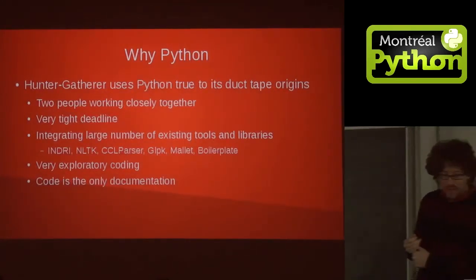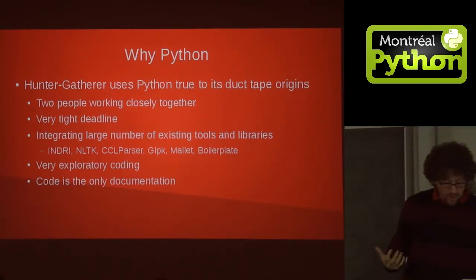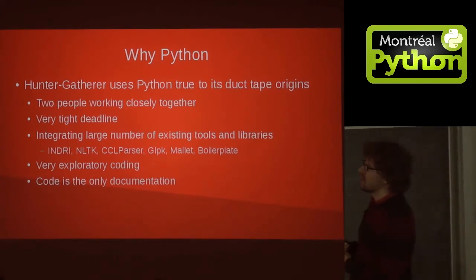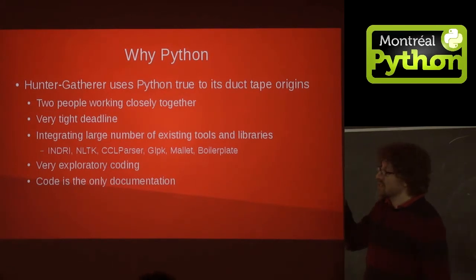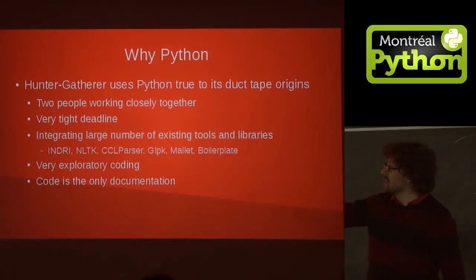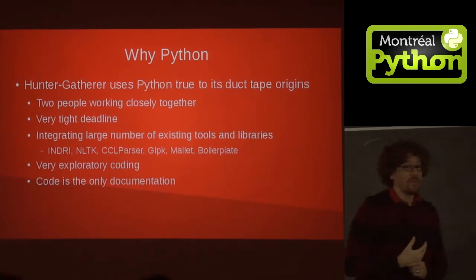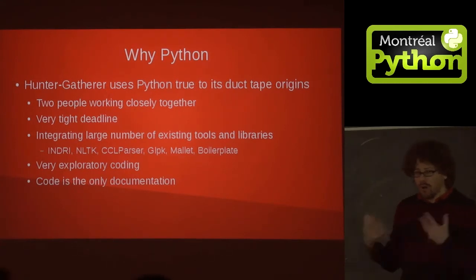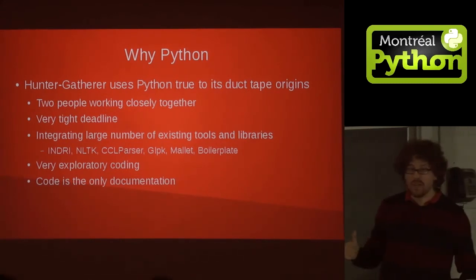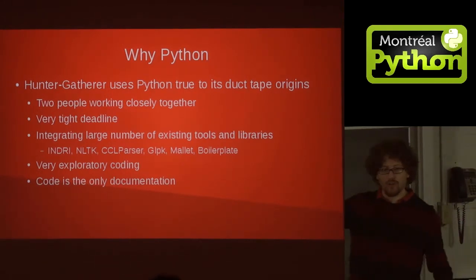The important part: why Python? I believe Hunter-Gatherer really goes back to the duct tape language origins of Python. We had two people working very closely together under a tight deadline, integrating a large number of existing tools and libraries. We used Indrid as a research search engine written in C++, NLTK, a CCL parser which is a C++ unsupervised parser, GLPK which is what we're speaking about today, Mallet which is a Java machine learning library, and boilerplate to extract text from pages, plus others. Very, very exploratory coding. The most important thing I want to bring up about the goodness of Python: we had absolutely no documentation — the code was the only documentation we had — and from that perspective, Python was amazingly successful. Jing is from China, I'm from Argentina, but we could understand the code much better than we could understand each other speaking.